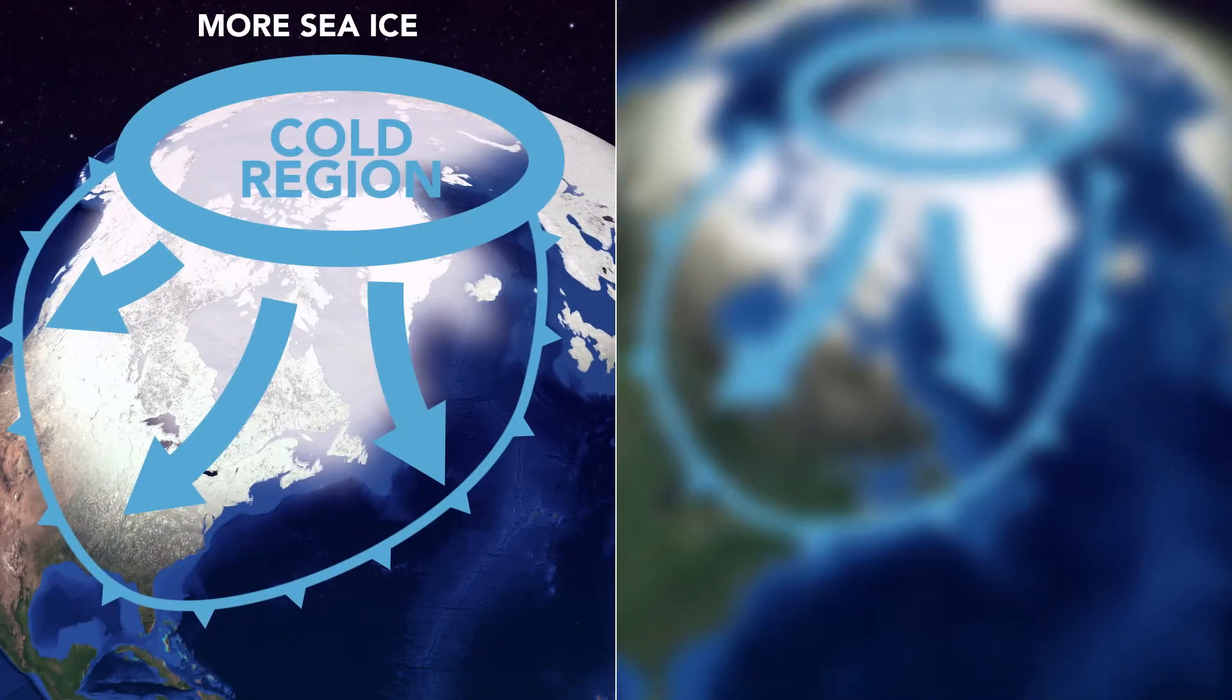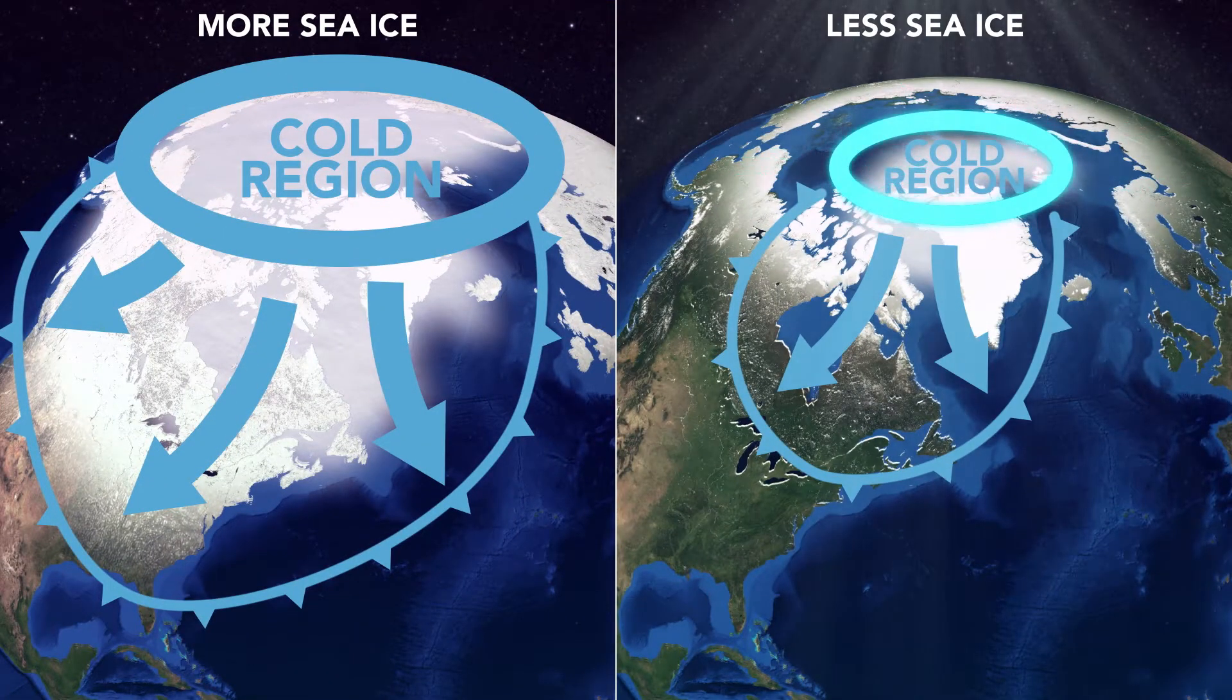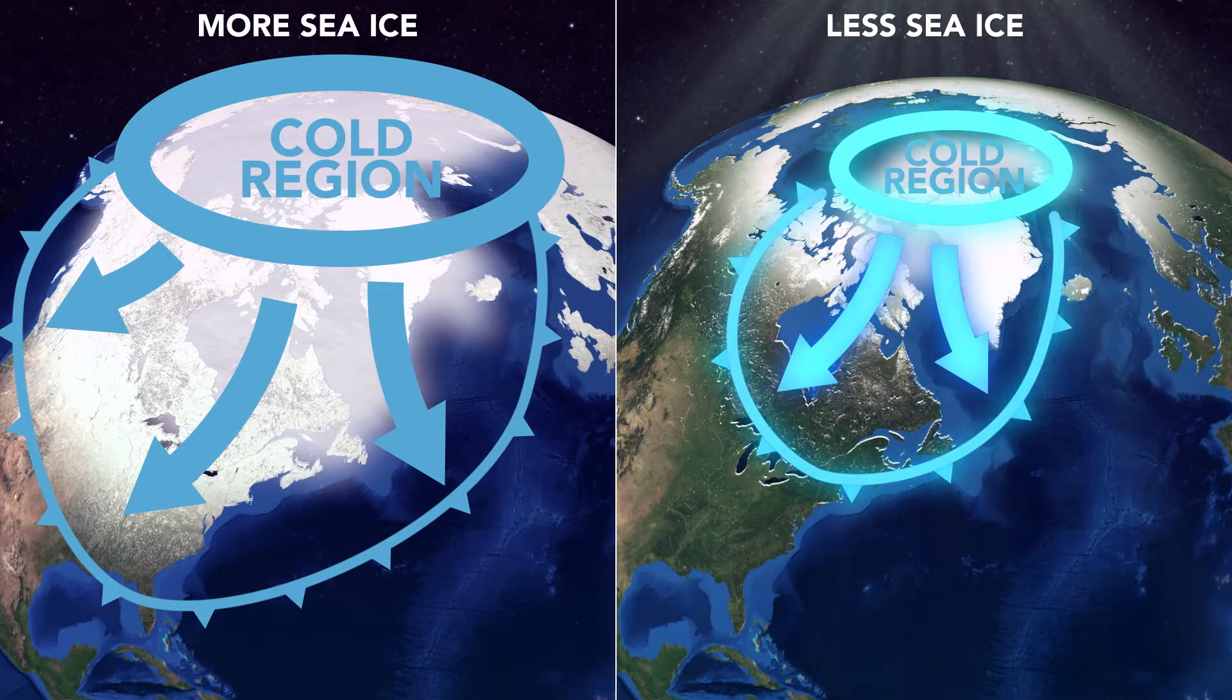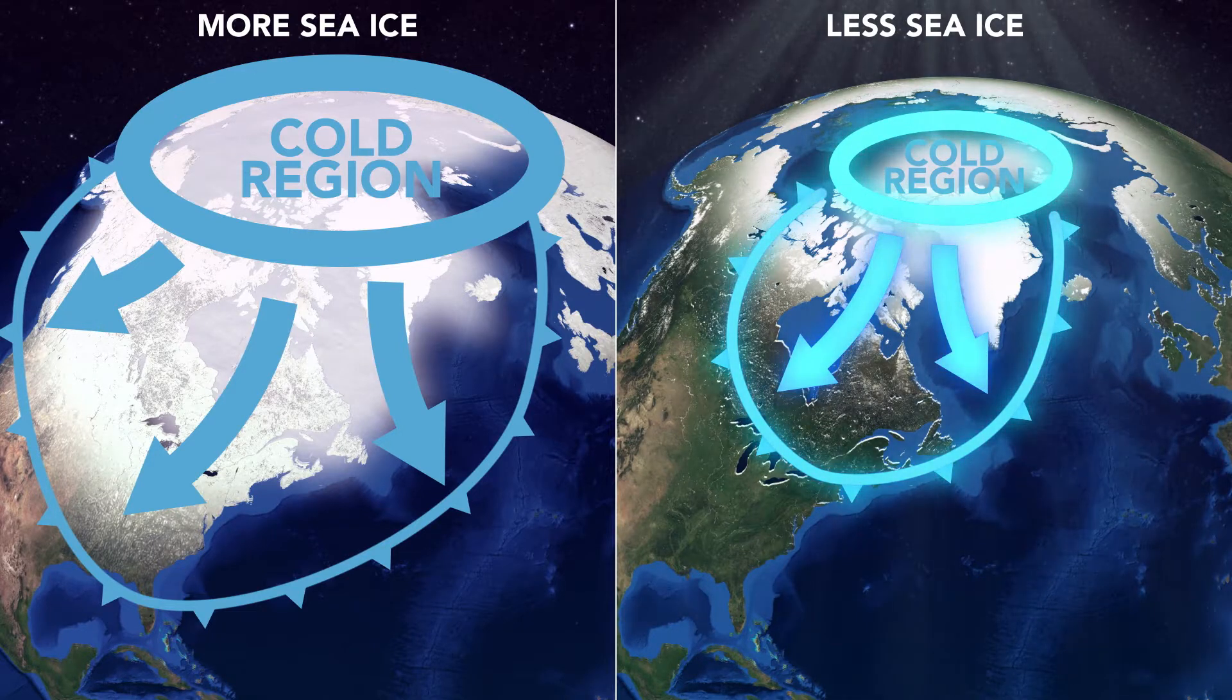But when the ice melts in the summer, it drastically reduces the region over which cold air masses can develop, and the cold fronts that bring Arctic air into the United States are no longer as strong because there isn't as much cold air to bring out of the Arctic.